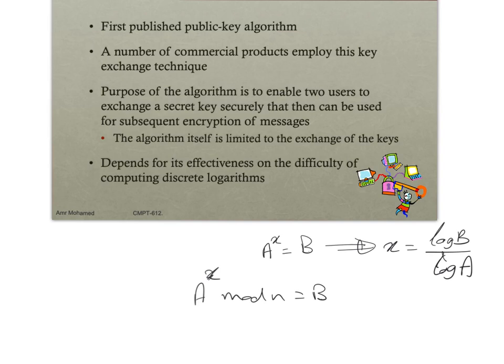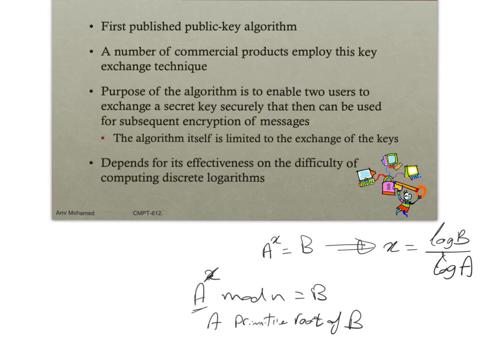This will be more difficult, and we can add another level of difficulty if a is actually a primitive root of b. What this means is that for each value of x, the exponent, you have a different value for b. So having a unique value for each value of x makes this problem more difficult.